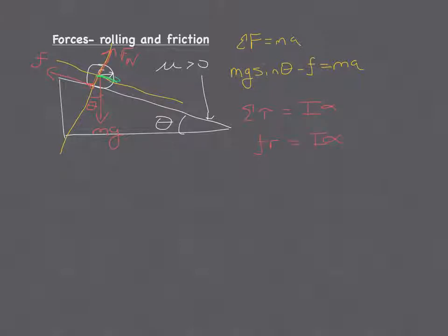And if we do the torques, we have friction acting at R, and that's I alpha. The friction for the torque equation is positive because that's going to start the rotational acceleration. It's negative for the translational because it's going to act opposite.